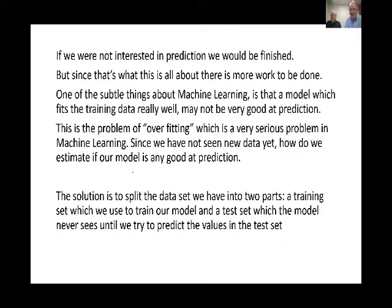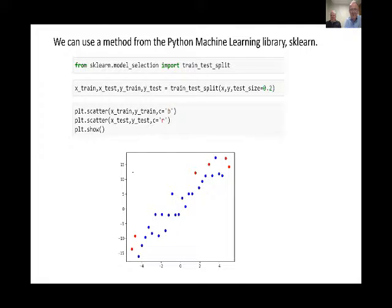This is a problem prevalent in machine learning, and there's a lot of work trying to figure out how to address it — you can't get rid of it entirely, but you can try to make it less severe. One way to estimate how well a model predicts is what we are going to do next.